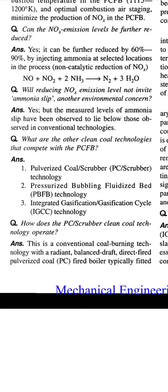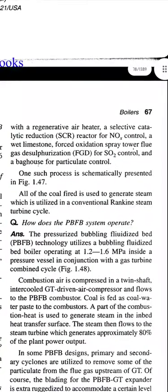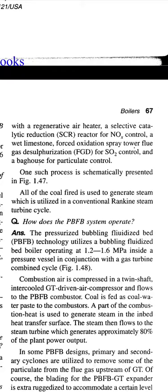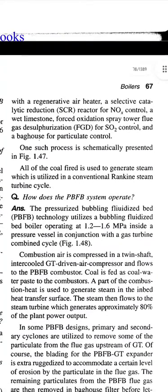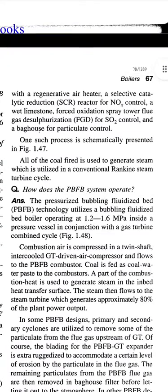Question: How does PC scrubber clean coal technology operate? Answer: This is conventional coal burning technology with a radiant balanced draft direct-fired pulverized coal boiler, typically fitted with a regenerative air heater, a selective catalytic reduction (SCR) reactor for NOx control, a wet limestone forced oxidation spray tower flue gas desulfurization system for SO₂ control, and a baghouse for particulate control. One such process is schematically presented in the figure. All of the coal fired is used to generate steam, which is utilized in a conventional Rankine steam turbine cycle.